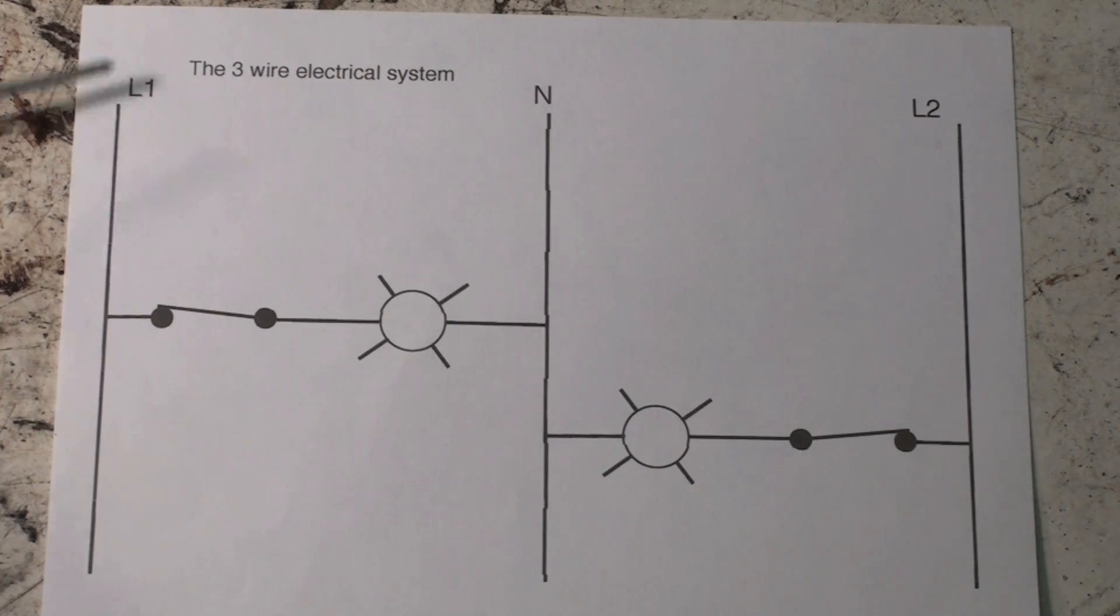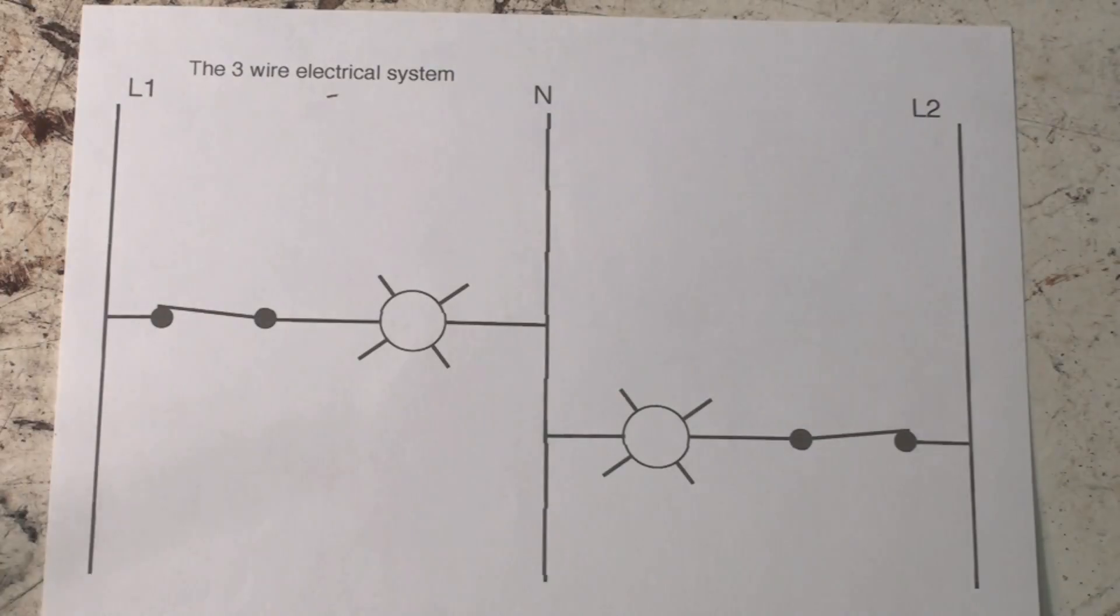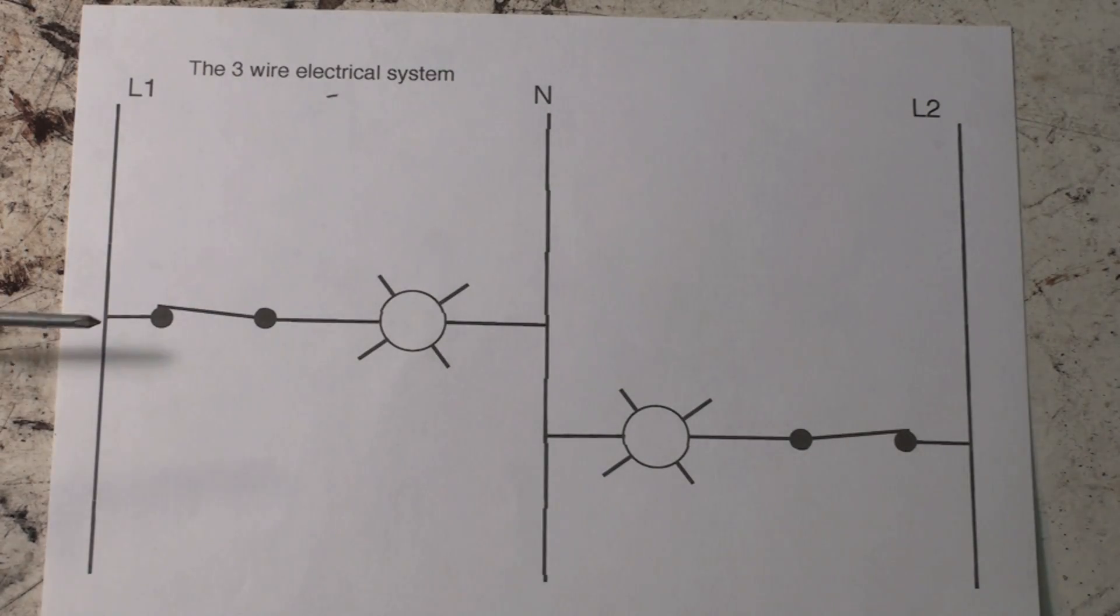When we have 120-volt loads, they go to the neutral. The neutral is not ground—the neutral is the neutral. So power passes through this normally closed switch to illuminate a light.